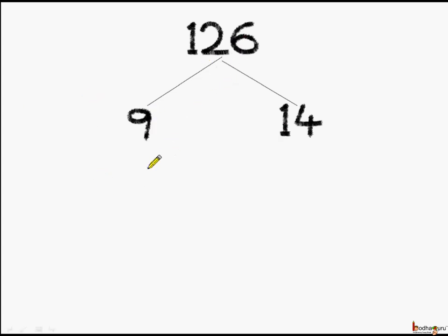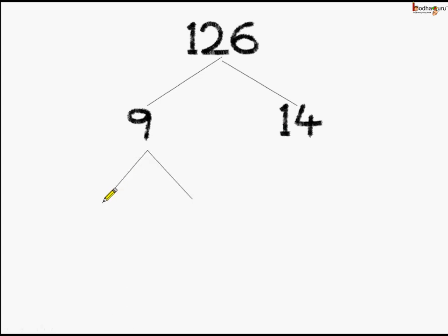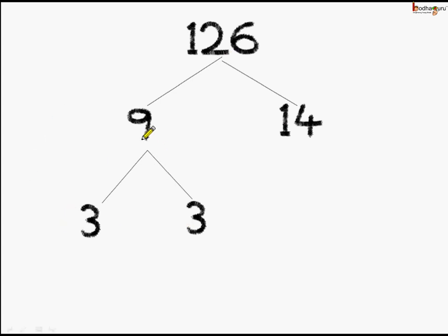Now, let's see this 9. 9 is not a prime number, so we can factorize it again. For this, we know 3 threes are 9. Let's make two branches and write down 3 multiplied by 3, which gives us 9.